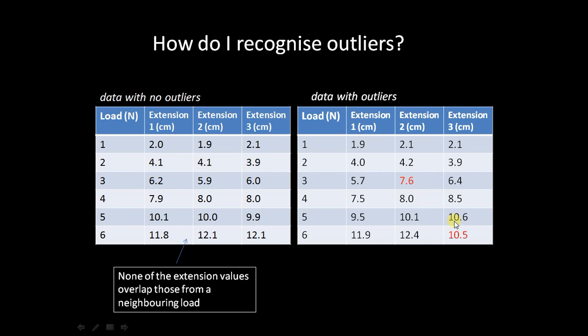There's also a second outlier. If we look at the third repeat for a load of six newtons we can see that the value is small and in fact it's smaller than the third repeat for a load of just five newtons. So there's an overlap there with the range bars. So again we have an outlier and we're quite justified in highlighting that.